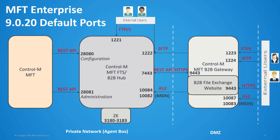Here you can see the default port diagram for Managed File Transfer Enterprise 920. The gateway now listens for hub registration and updates on the same HTTPS port used for external user connections, which is 9443. This means the firewall should be configured to accept requests on this port also from the hub nodes. Note that the gateway can be configured to listen for hub nodes on a different port than the one used for incoming requests from external users. Each MFT node now includes a ZooKeeper server node instance that listens on ports 3180 through 3183.